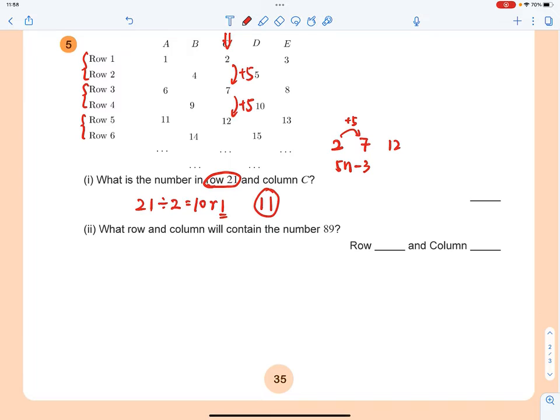Now, the number in row 21 and column C will be the 11th number in column C. Let n equal 11. 5 times 11 minus 3 equals 55 minus 3, which is 52. That's the answer for the first question.